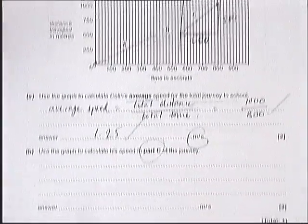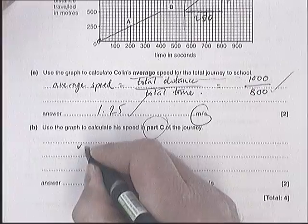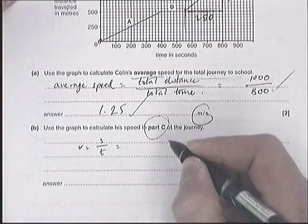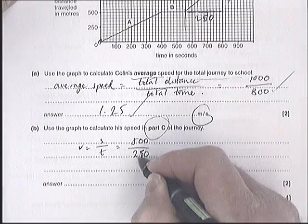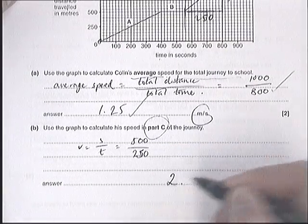Same equation. Speed is distance over time, which is 500 divided by 250. The answer in this section is 2.